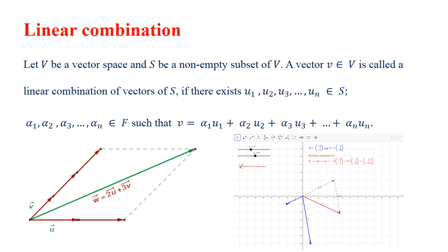Such that v can be written as the sum alpha1·U1 + alpha2·U2 + ... + alphaN·UN. When we are able to express these vectors as a single vector V, we call V a linear combination of U1, U2, ..., UN. In the graph, W can be written as a linear combination of U and V with scalars — for example, 2 times U and 3 times V.